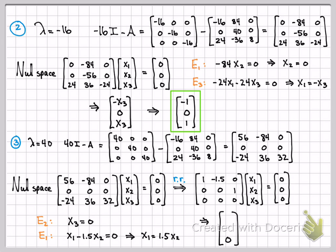I'll set x2 equal to 1. By the equation, x1 must be 1.5, and x3 is zero. So the final basis vector is [1.5, 1, 0]. We've now found three vectors serving as basis vectors for the eigenspace — one for each eigenvalue — and together these form the final basis for the matrix.